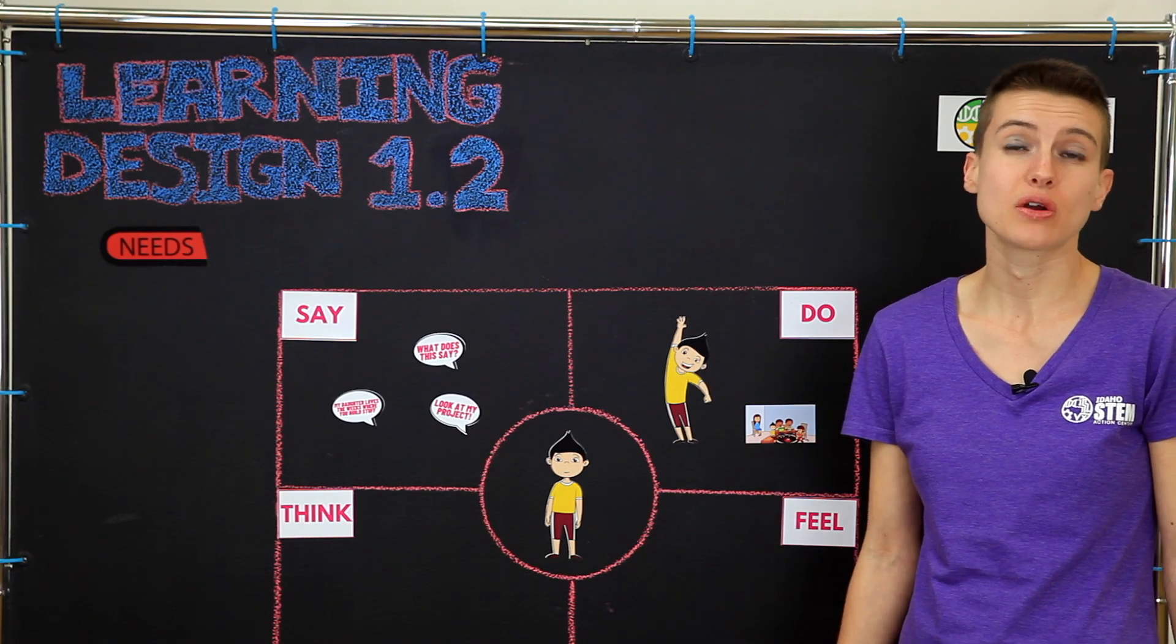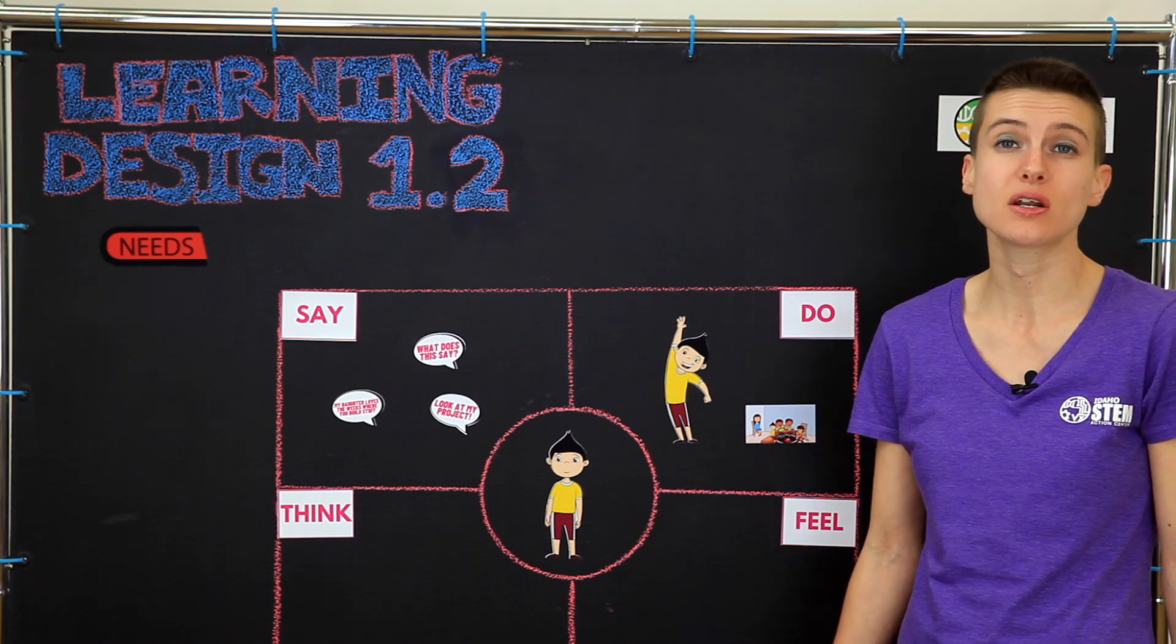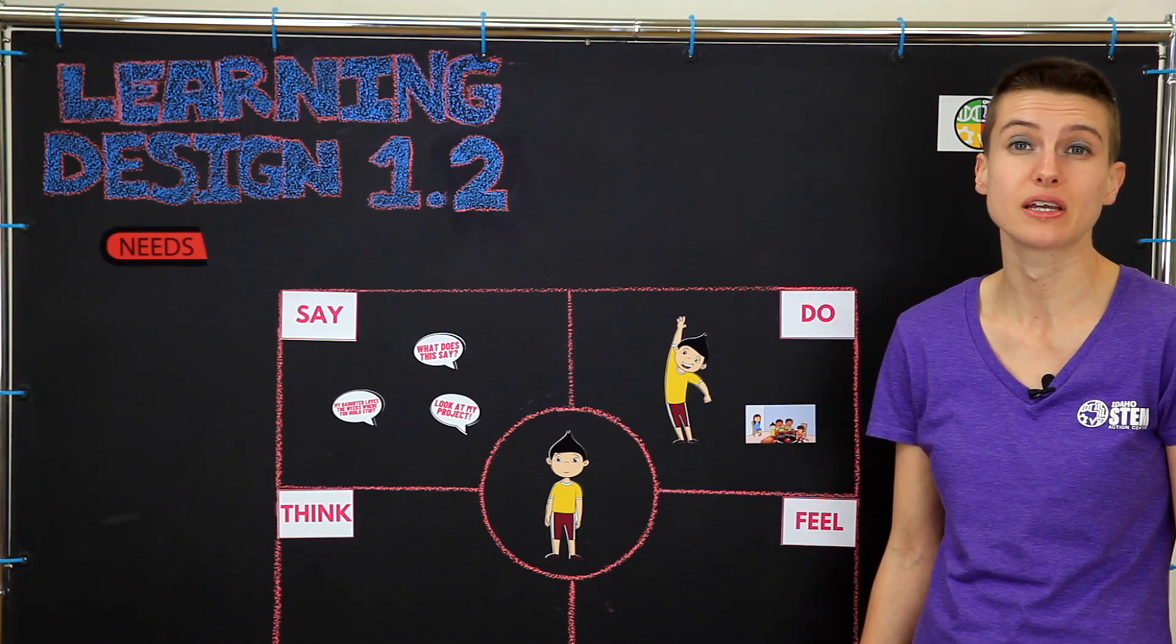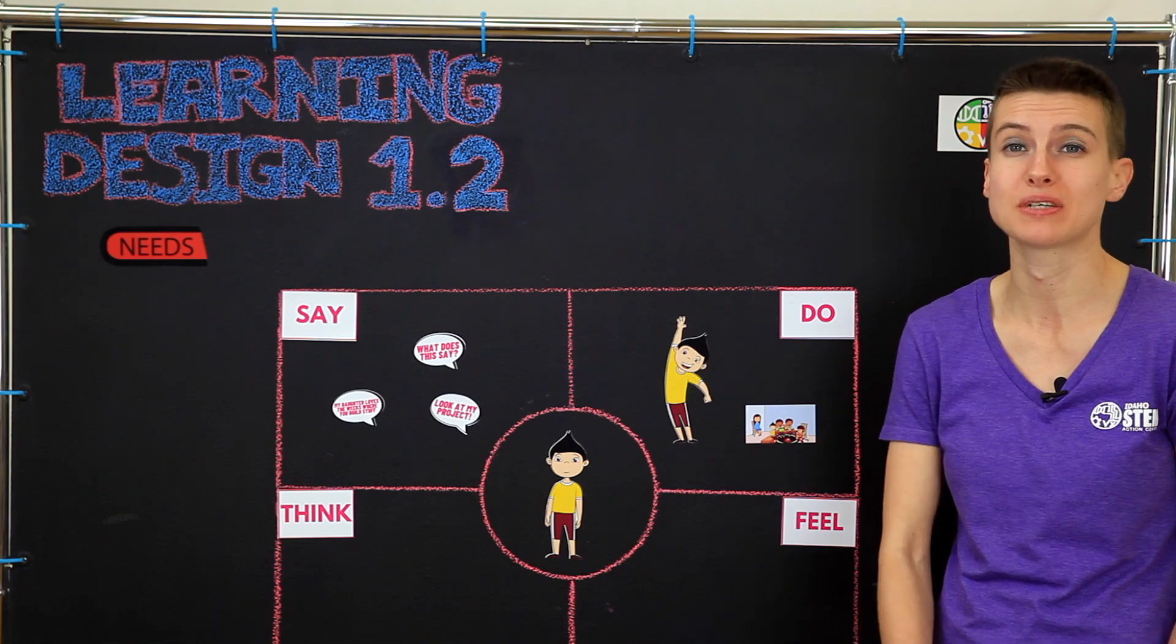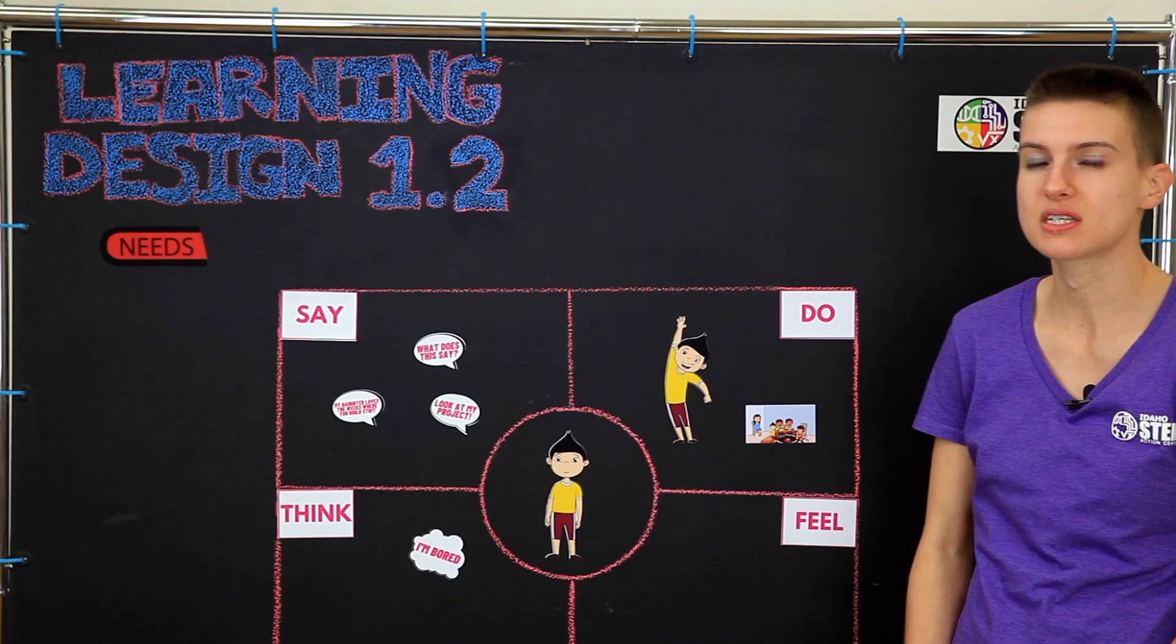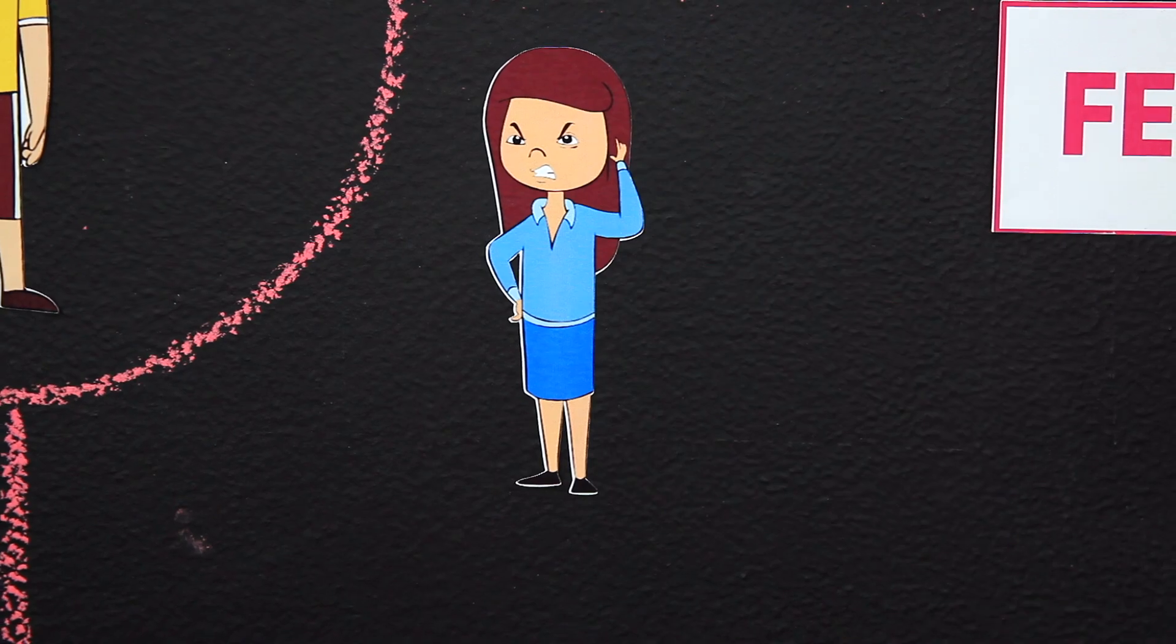The next two quadrants ask us to go deeper with our observations and consider what our learners might be thinking or feeling. In some cases, a learner might simply tell you what they think, or make obvious displays of their feelings, such as pouting or crossing their arms.